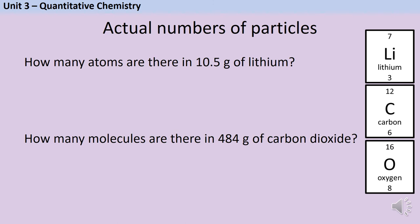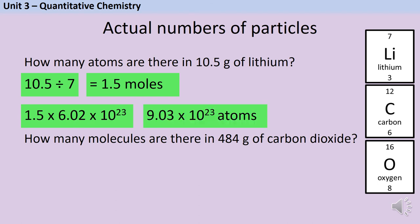So in 10.5 grams of lithium there'll be 10.5 divided by 7 moles. That's 1.5 moles of lithium atoms. And then I know that each mole is a multipack containing 6.02 times 10 to the 23 atoms. So 1.5 multiplied by that Avogadro's number gives me 9.03 times 10 to the 23 atoms.